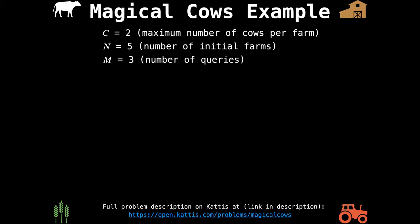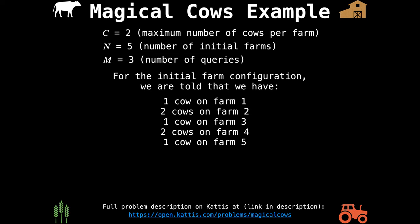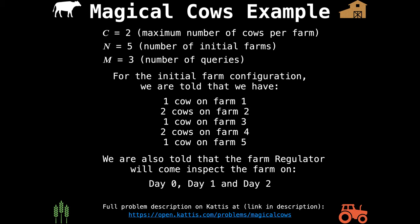Let's have a quick look at an example for the Magical Cows problem. Suppose the maximum number of cows per farm is two, there are five initial farms, and we need to answer three queries. The initial farm configuration is: one cow on farm one, two cows on farm two, one cow on farm three, two cows on farm four, and one cow on farm five. The regulator will come inspect the farm on day zero, day one, and day two.